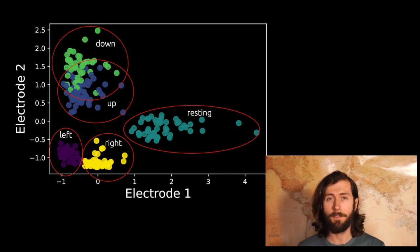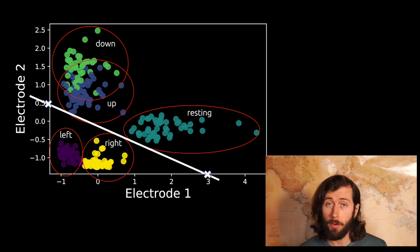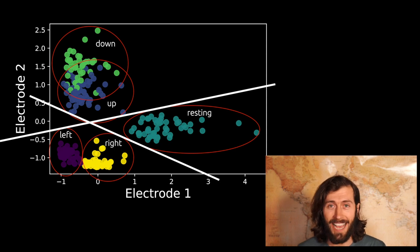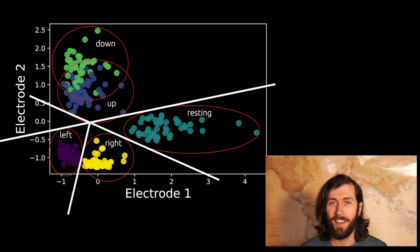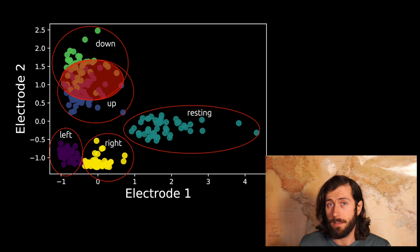What machine learning does is it tries to find a rule that separates these classes from one another. For instance, it could say anytime that the activity is less than three on electrode one, and less than 0.5 on electrode two, let's draw a plane. This plane separates the left and the right classes from the other three classes. And it can keep repeating this process to find different separating planes. For instance, this plane might separate the up and down from the rest of the classes. And this plane nicely separates the left from right. But when we look at up and down, we find that we can't really find a nice plane that separates these two classes. This leads to a problem because we have some overlap between the two groups, which will lead to errors.